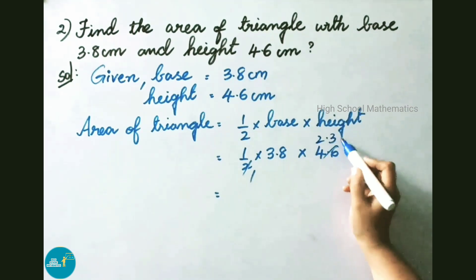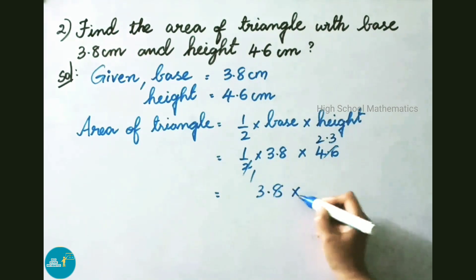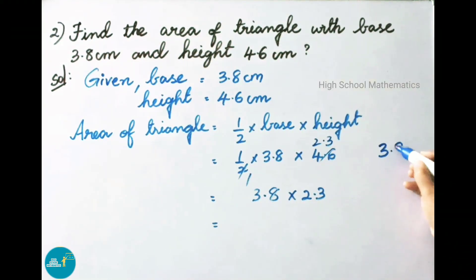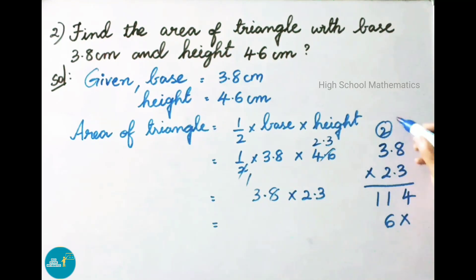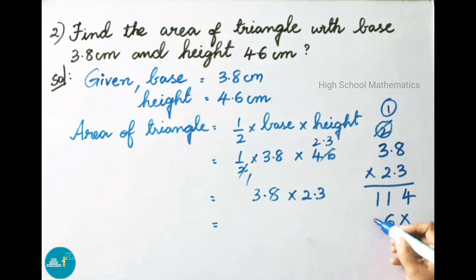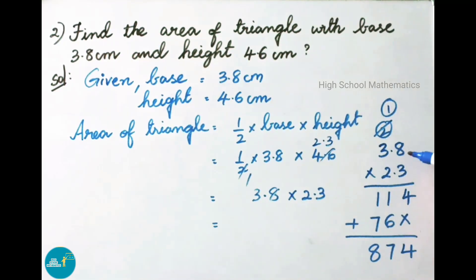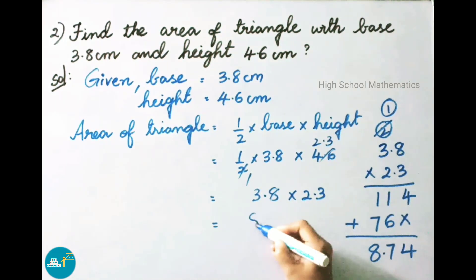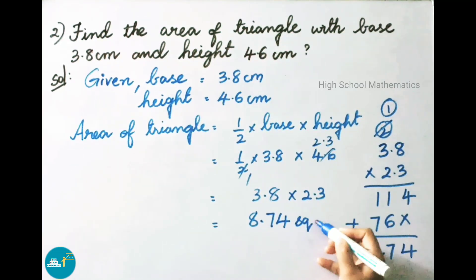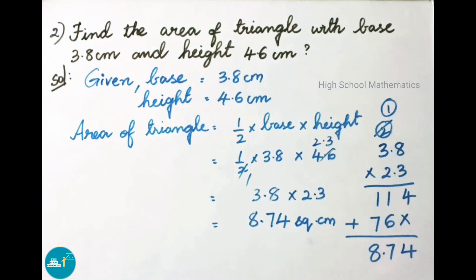We need to multiply 3.8 and 2.3. Working through the multiplication: 3 eights are 24, carry 2; 3 threes are 9, plus 2 is 11. Then 2 eights are 16, carry 1; 2 threes are 6, plus 1 is 7. Adding 114 and 76: 4 plus 6 is 10, carry 1; 1 plus 7 plus 1 is 9... giving 874. With 2 decimal places total, the answer is 8.74 square centimeter.